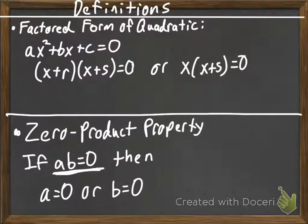So, if you see a times b or something like that equal to 0, either a has to be 0 or b has to be 0. So, we can set a equals 0 or we can set b equal to 0.